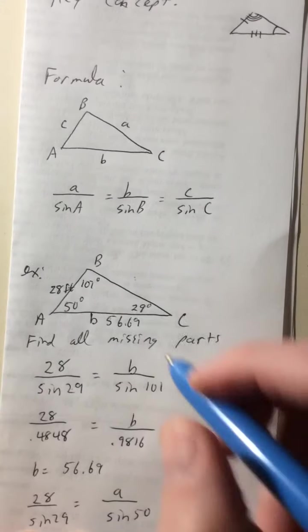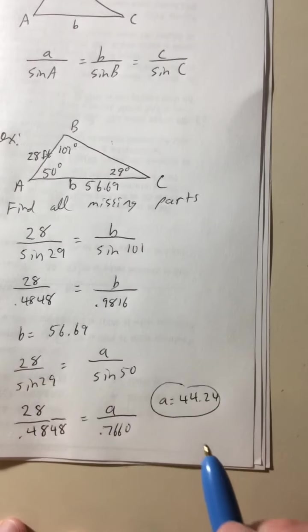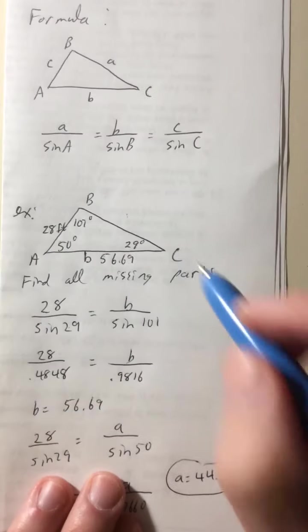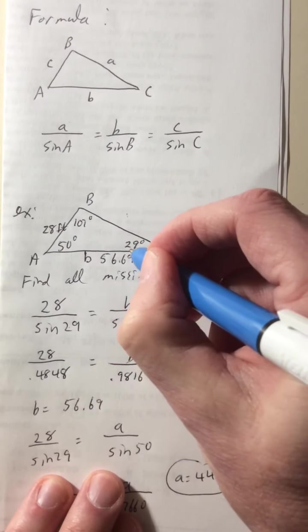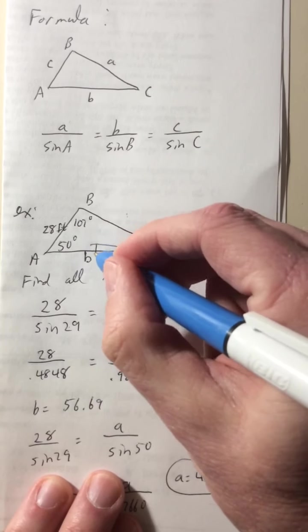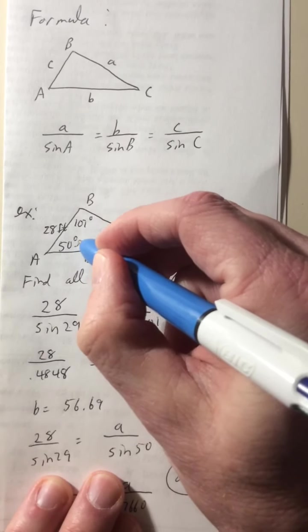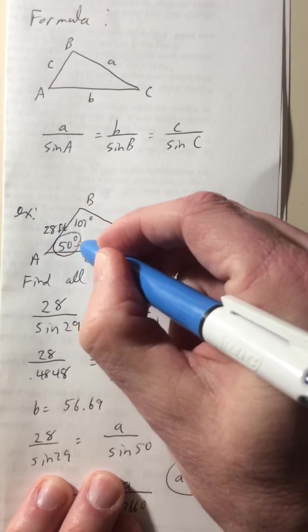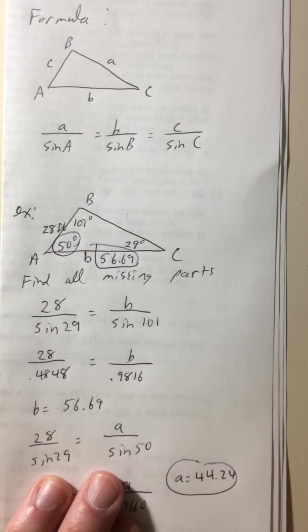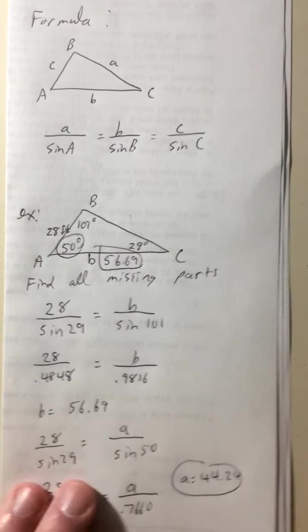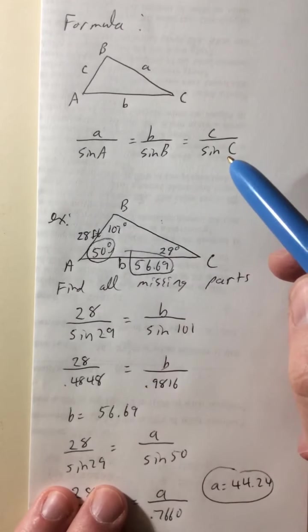So that was a missing side. 44.24, that was a missing side. This was a missing side. And this was a missing angle. So we're missing one angle and two sides, and we got them all. Okay. So that's it. This is the law of sines, and this is how to do it. Obviously things get a little more complicated, but not much.